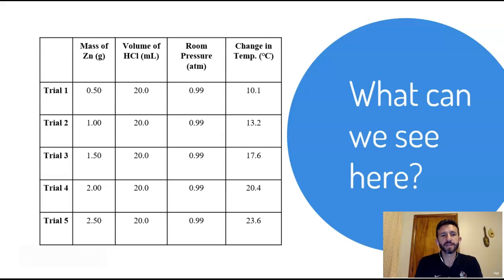So here's the data table and what do we see here? Well, I see that there are five trials and then I see mass of Zn in grams. Zn is actually zinc, but even if you don't know that, that's okay. Grams is a solid.